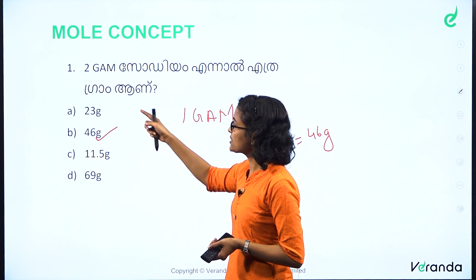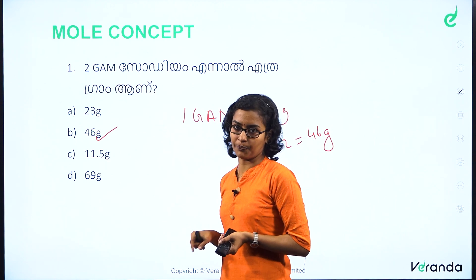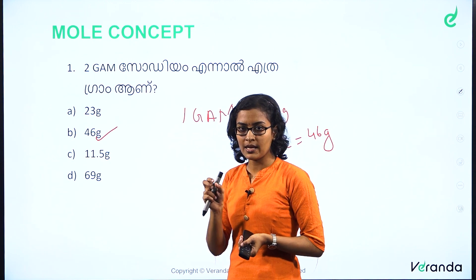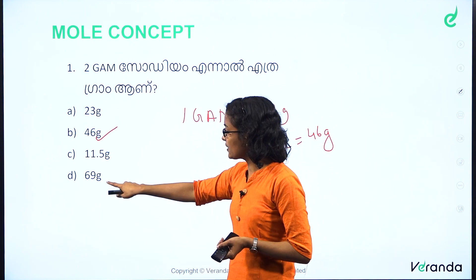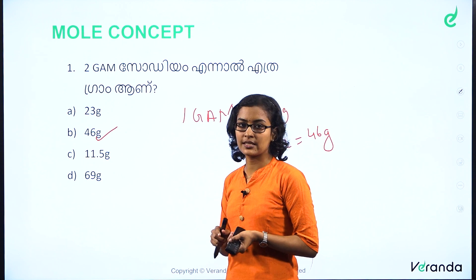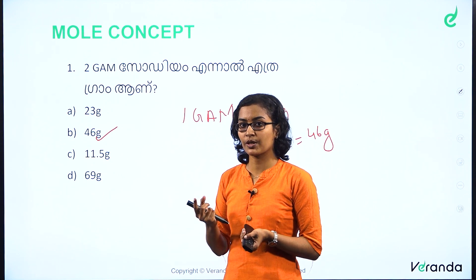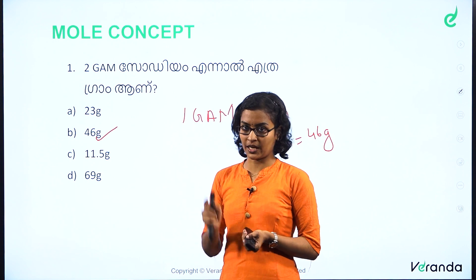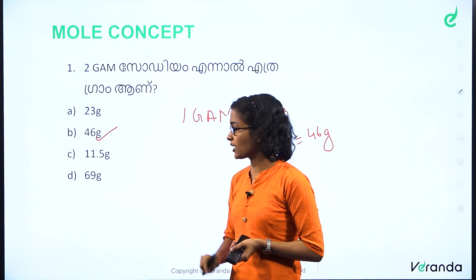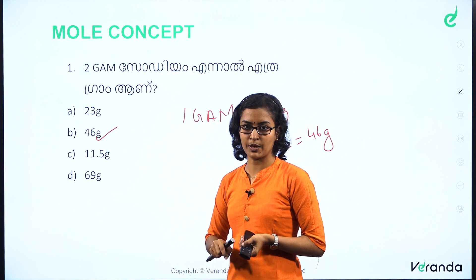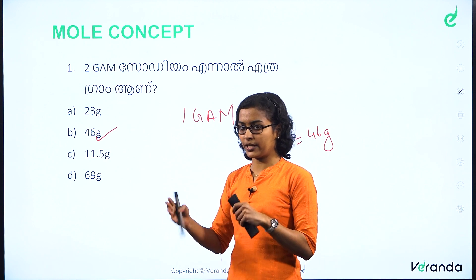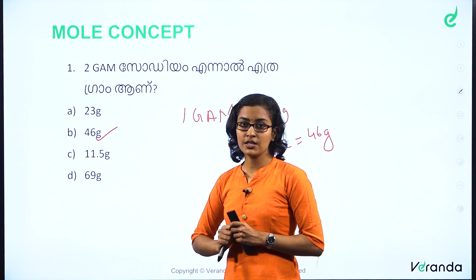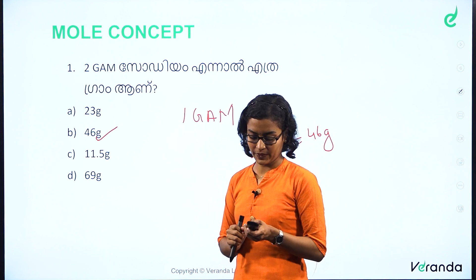If you have a question of 0.5 gram atomic mass, the answer is 0.5 GAM is correct. If you have 69 grams of sodium, the answer is 3 gram atomic mass of sodium. If you have 1 gram atomic mass of sodium, the answer is 23 grams. We are going to discuss this question.